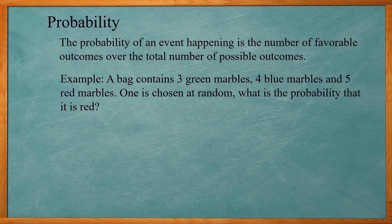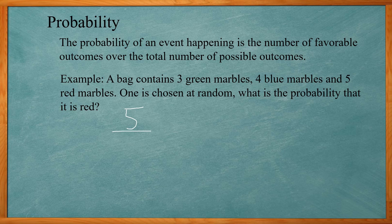So what is probability? The probability of an event happening is the number of favorable outcomes over the total number of possible outcomes. For example, I have a bag that contains three green marbles, four blue marbles, and five red ones. If one is chosen at random, what is the probability that it is red? Our favorable outcomes are red marbles — that's five. Our total number of possible outcomes include the three green, four blue, and five red, for a total of 12. So your probability of getting a red marble is five out of 12.